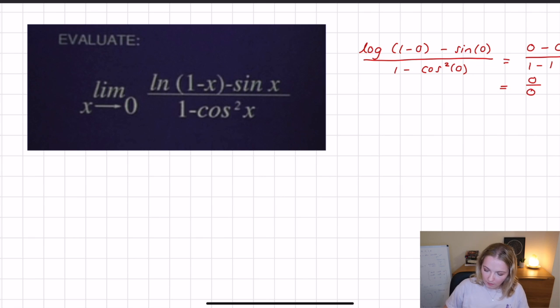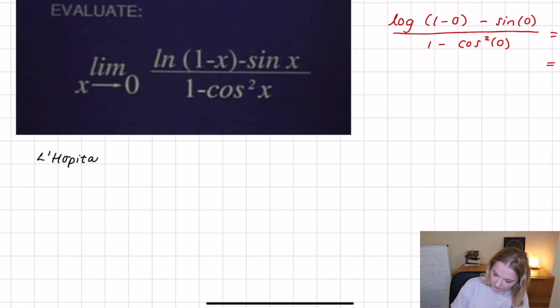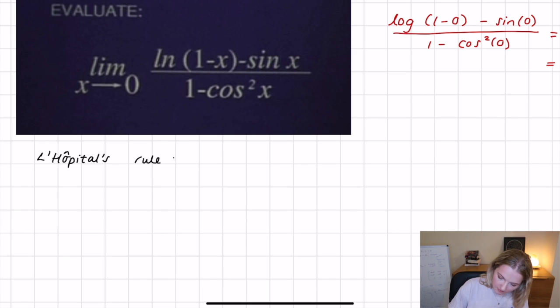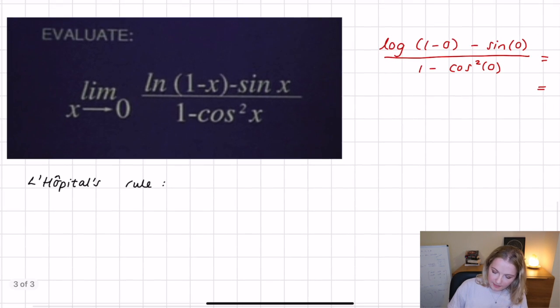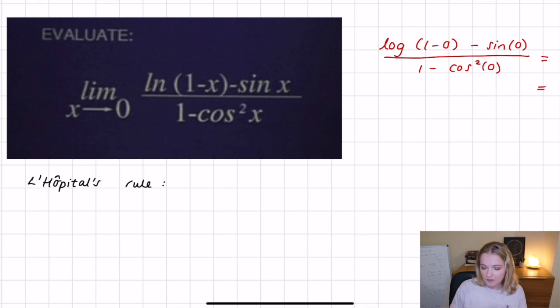L'Hôpital's rule allows you to take limits that originally have indeterminate forms and compute them through derivatives. What L'Hôpital's rule says is you can take a limit, and if you take the derivative of the top and the bottom of the limit, you can evaluate that limit.